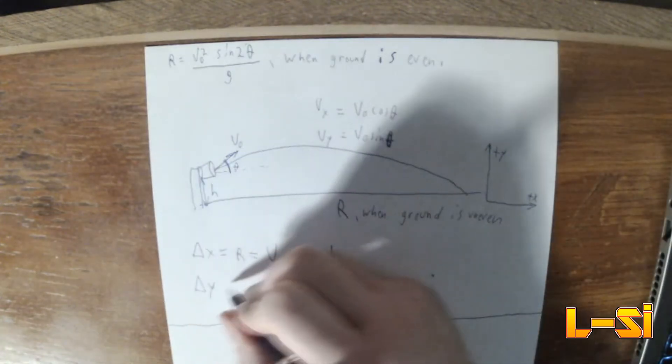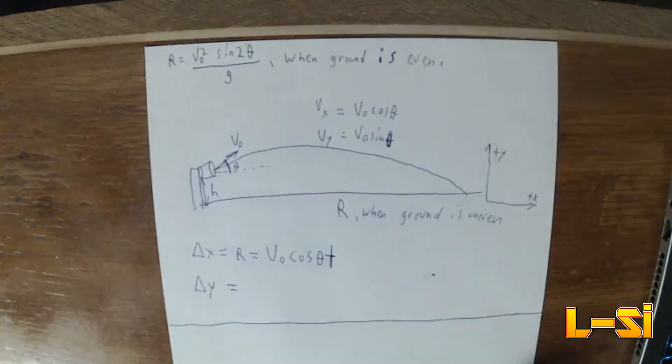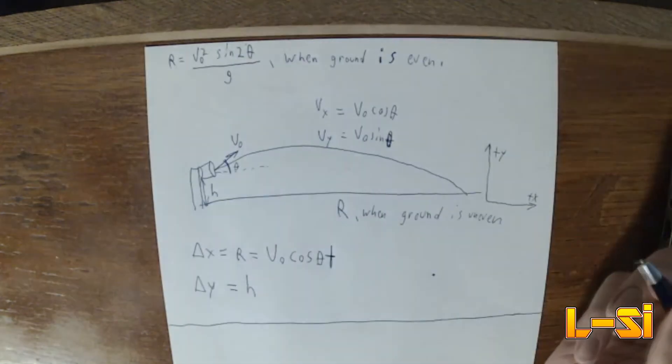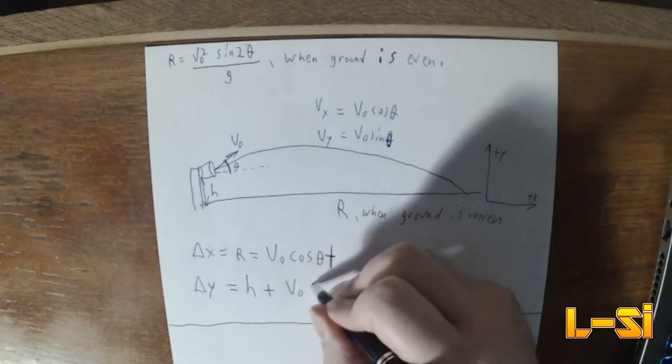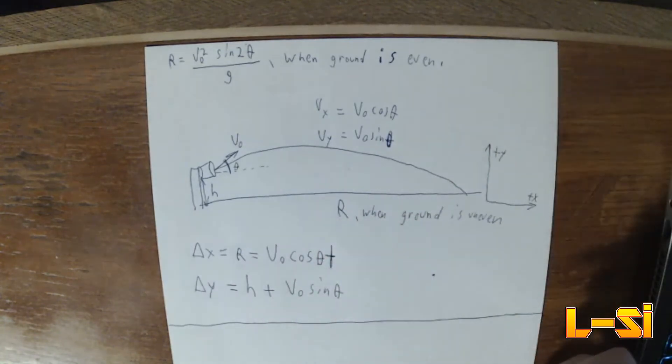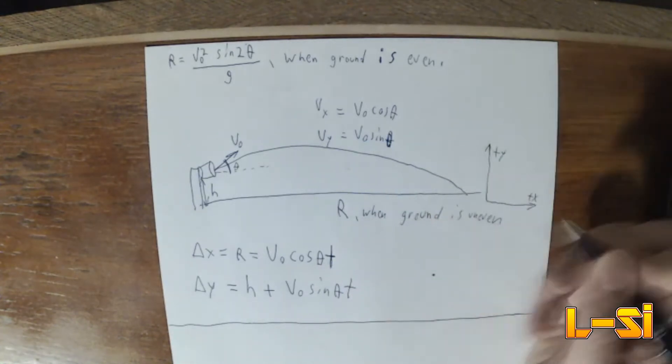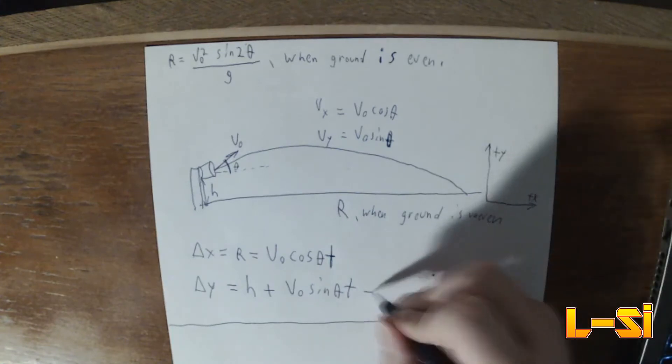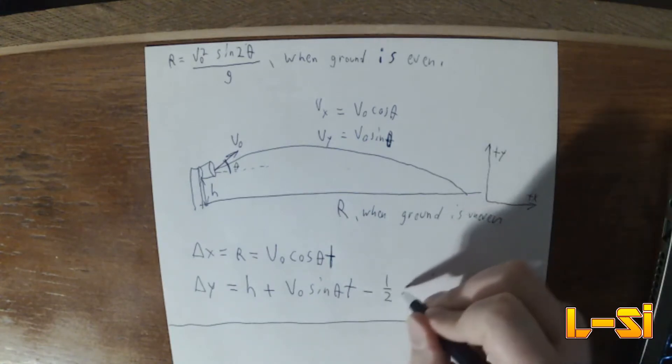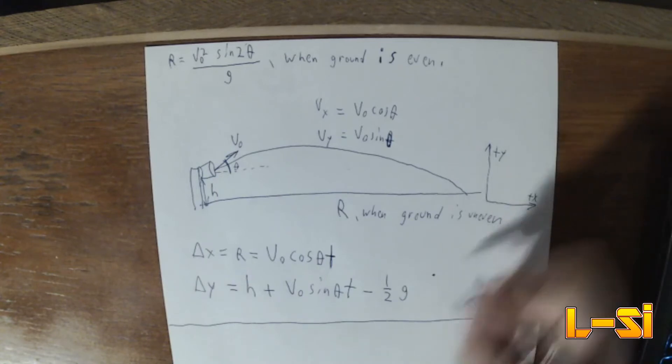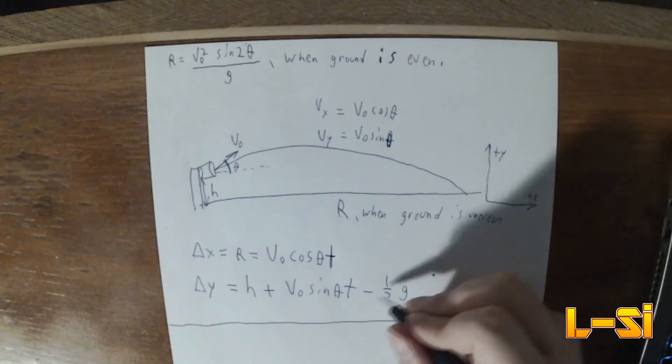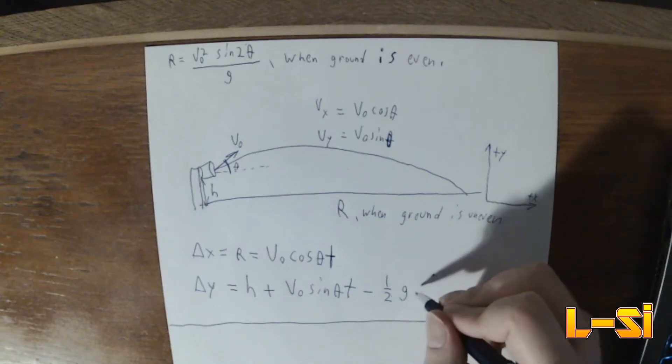Change in the Y. This is going to be equal to your initial height, plus your velocity in the Y, which is V-naught sine of theta, times time, minus your acceleration, because it's going to be negative if we assume this is the negative Y direction, because gravity always points down. So we're going to have negative one-half times your acceleration due to gravity times time squared.